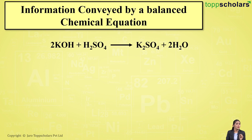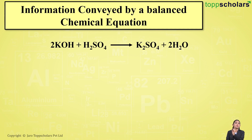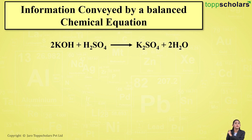A balanced chemical equation is a chemical equation wherein the number of atoms on the left-hand side of the reaction is equal to the number of atoms on the right-hand side. This means that the number of atoms present on the reactant side is equal to the number of atoms present on the product side.